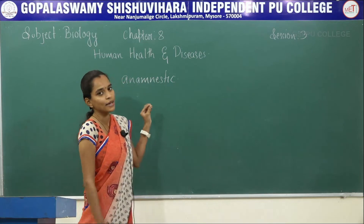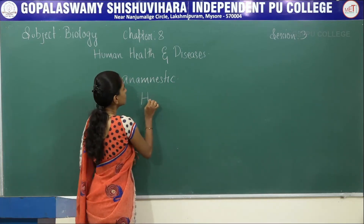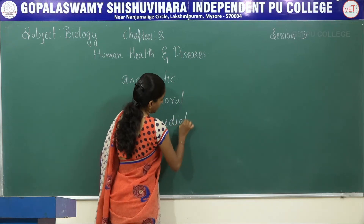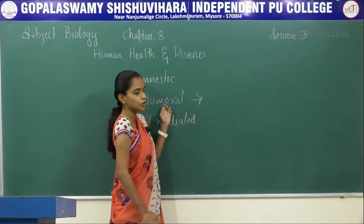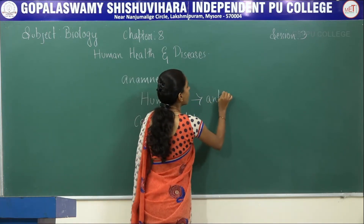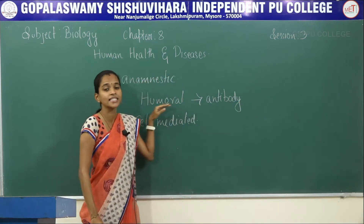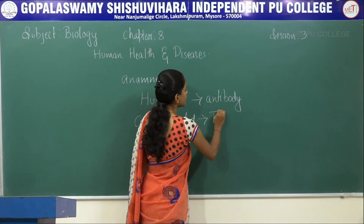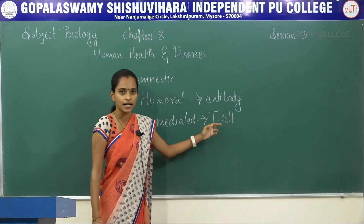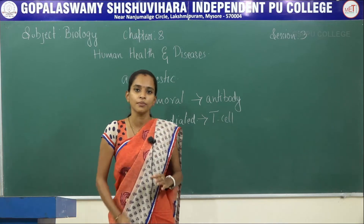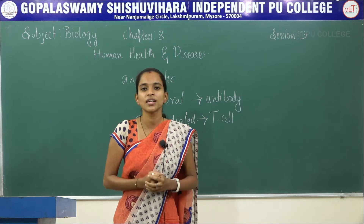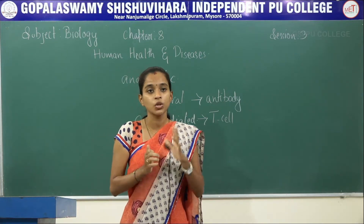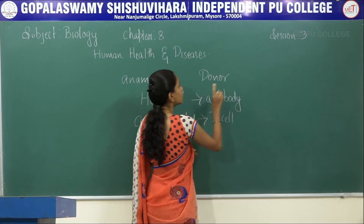Humoral immunity is mediated by antibodies, whereas cell-mediated immunity is mediated especially by T cells — T lymphocytes mediate the cell-mediated acquired form of immunity. For example, consider a patient needing a kidney, liver, or any organ transplant. There will be two persons: a donor who donates the organ and a recipient.